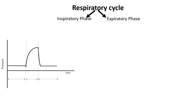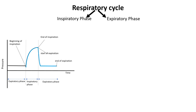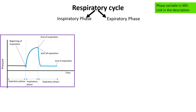Let's illustrate this on a pressure-time waveform. During the inspiration phase, the ventilator delivers a set volume or pressure of air into the lungs. In the expiration phase, the lungs passively release the air as the ventilator stops delivering pressure, allowing exhalation.